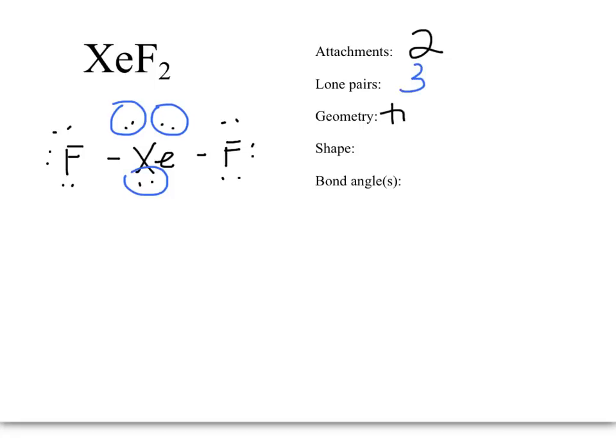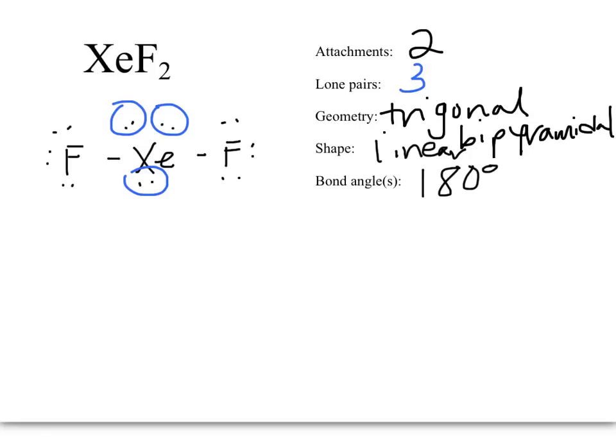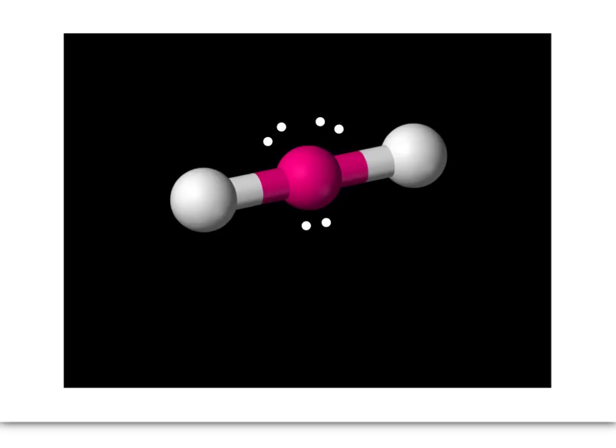The geometry name is trigonal bipyramidal. And we have a few shapes to choose from. It's going to be the last one, linear. So there's a linear shape for a linear geometry and a linear shape for a trigonal bipyramidal geometry. The difference is the number of lone pairs. Bond angle here would be 180 degrees, just like the linear shape for the linear geometry. Here is a 3D rendering of the trigonal bipyramidal linear shape.